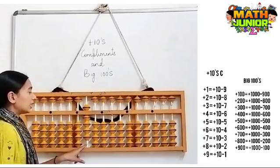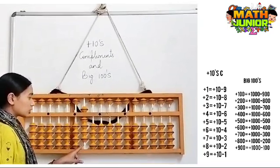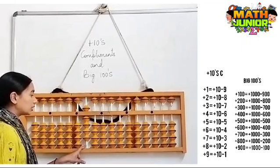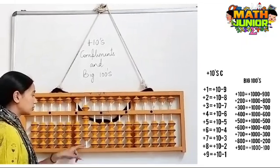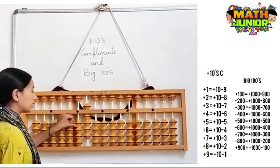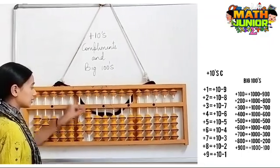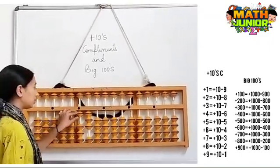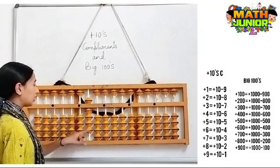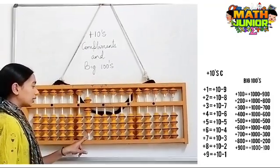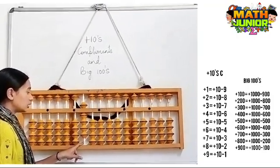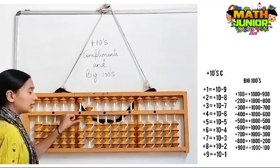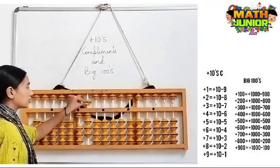Next, in the 100's lot, I have 900 here and I need to add 400. So the formula for plus 400 is plus 1000 minus 600. Next, I have 900 and I need to add 500. So the formula for plus 500 is plus 1000 minus 500.